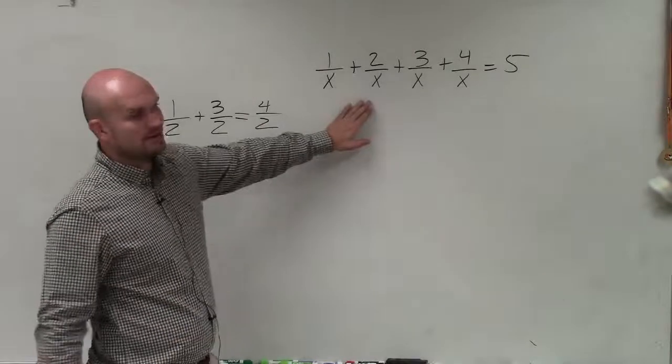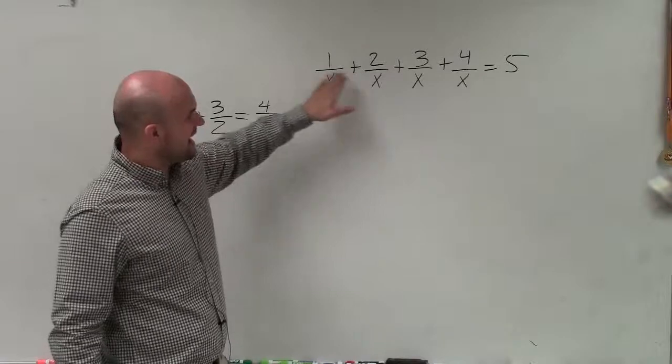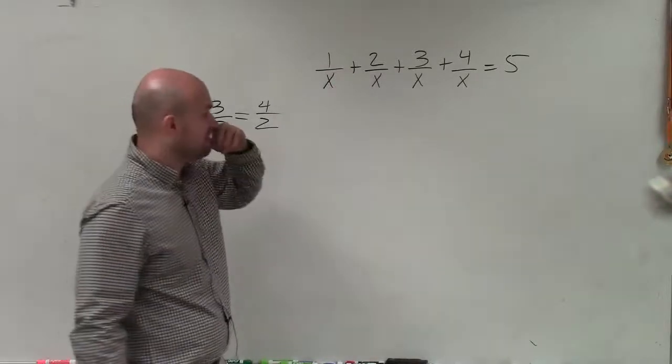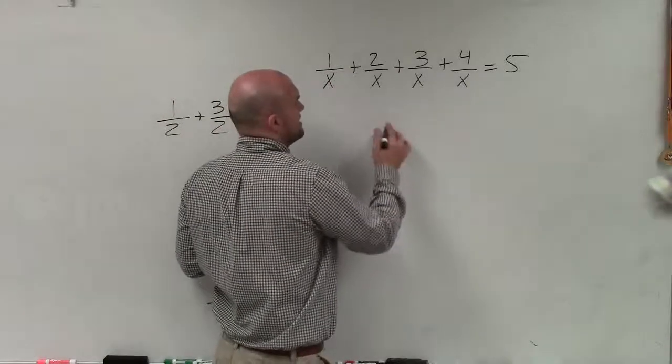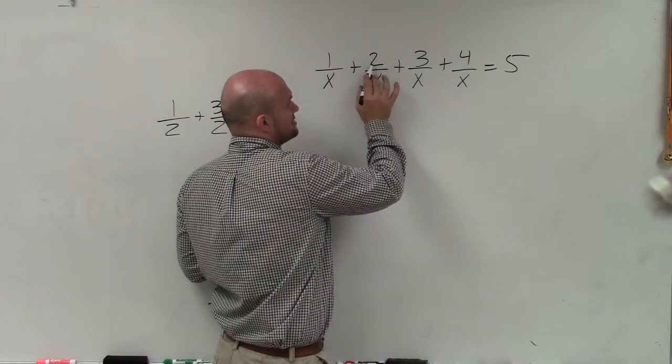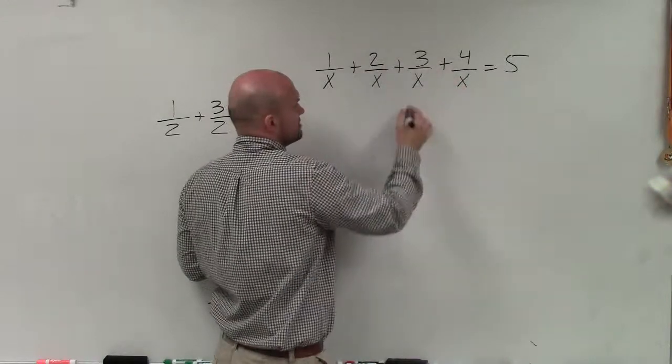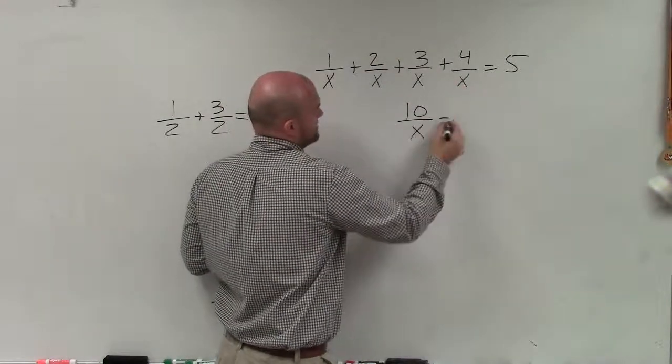So in this problem, that's going to be the exact same thing. I'm just going to add my numerators and then I'm going to keep the x as my denominator. So 1 plus 2 is 3, plus 3 is 6, plus 4 is 10. So I get 10 over x equals 5.